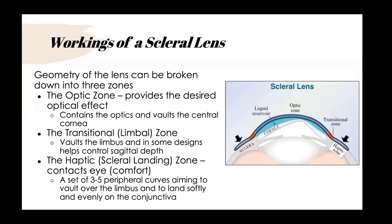Moving on to scleral lens basics: scleral lenses have a tear reservoir, vault over the cornea and the limbus, and align the edges nicely with the conjunctiva. We break the lens into three major zones: the optic zone, which is the central zone providing the optical effect and vaulting over the central cornea; the transitional zone toward the limbus, which can help control sagittal depth and limbal clearance; and the haptic or scleral landing zone, which involves several peripheral curves aiming to vault over the limbus and land softly and evenly on the conjunctiva.